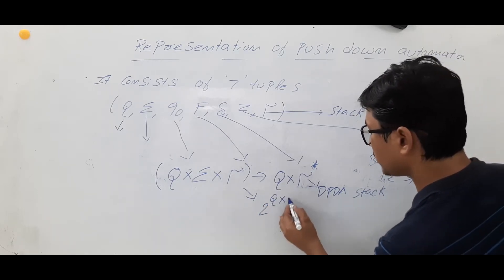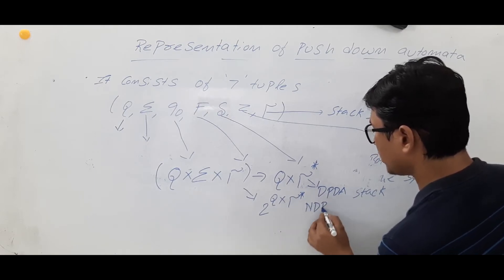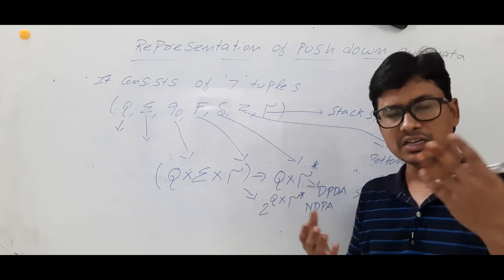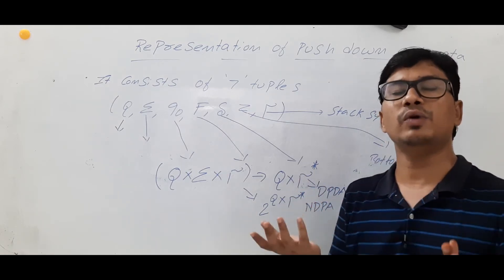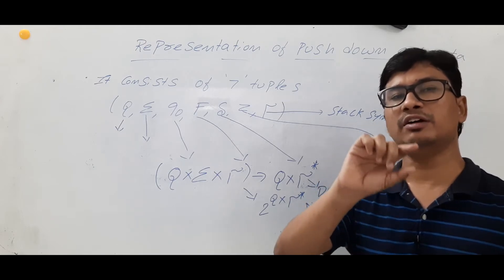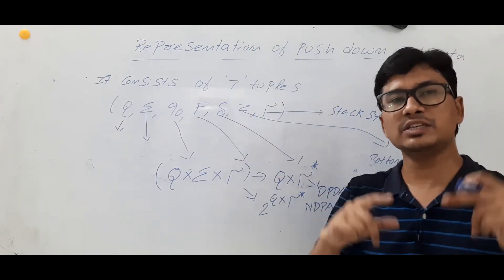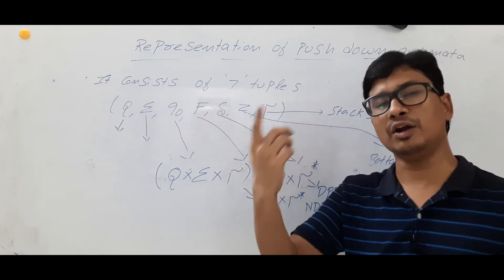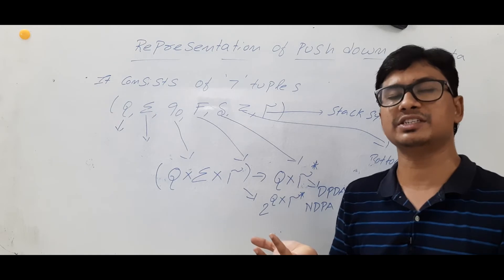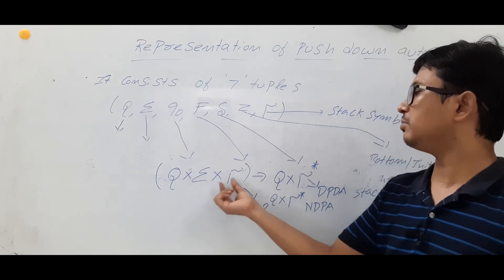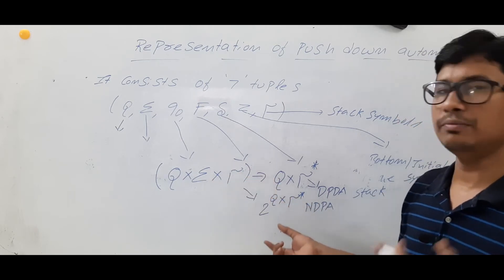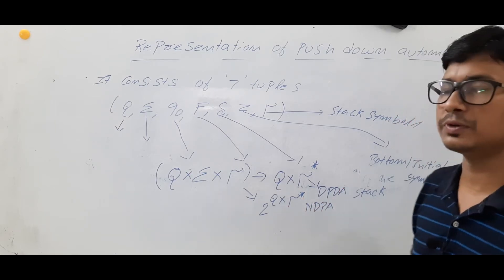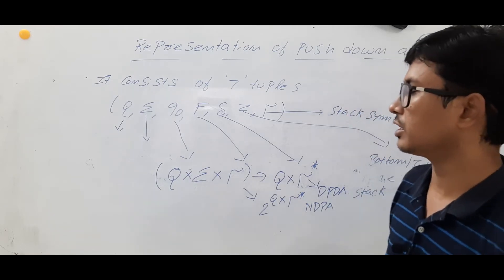In the same way, just as we have deterministic and non-deterministic finite automata: in a deterministic finite automata, from a state on taking an alphabet you go to exactly one state, whereas in a non-deterministic finite automata you can go to more than one state. Similarly, in non-deterministic pushdown automata, from Q on Sigma on taking Tau you can go to the power set of states — meaning zero or more states — and modify the stack content.